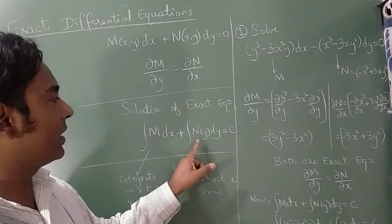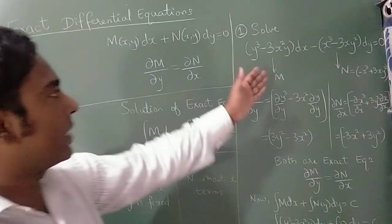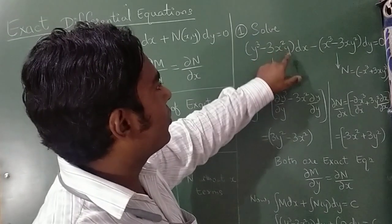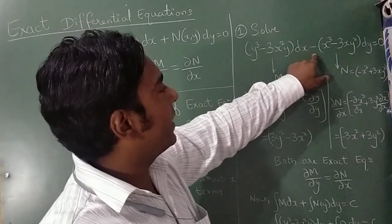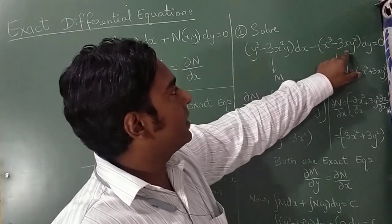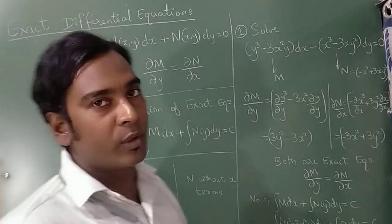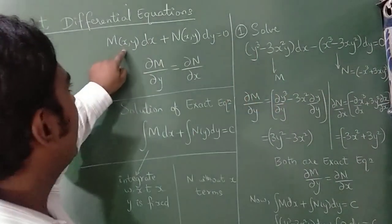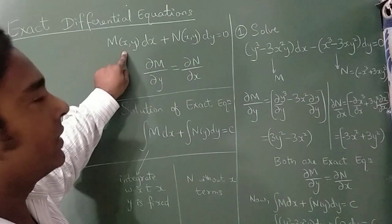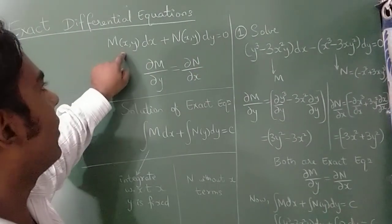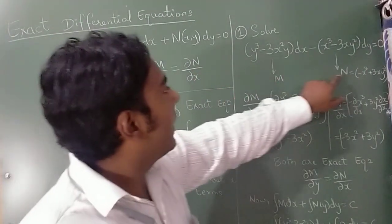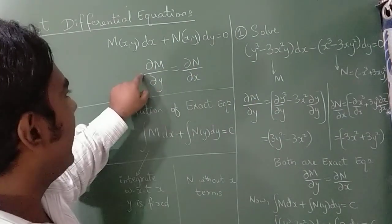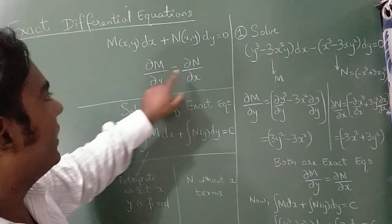Let's start with the first example: (y³ - 3x²y) dx - (x³ - 3xy²) dy = 0. From the given equation, M = y³ - 3x²y and N = -(x³ - 3xy²). Now I need to check whether this equation is exact or not.